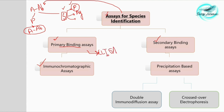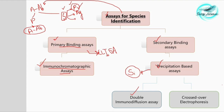ELISA — enzyme-linked immunosorbent assay — is a kind of primary binding assay that can be utilized for the species identification of blood. Similarly, immunochromatographic assays will be covered in detail in upcoming videos. The secondary binding assays used are immunodiffusion techniques: single immunodiffusion, double immunodiffusion, and immunoelectrophoretic techniques which include immunoelectrophoresis, crossed immunoelectrophoresis, and counter immunoelectrophoresis — all very important for confirming species identification.